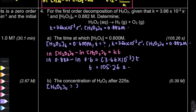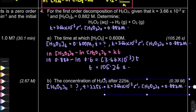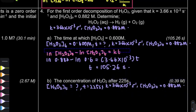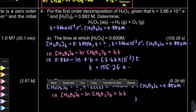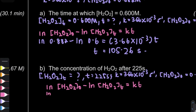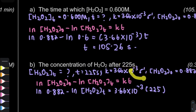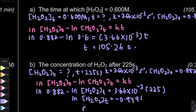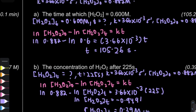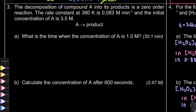Question B is different — they give you the time and ask for the concentration. K and the initial concentration come from the question. We use the integrated rate equation for first order, substitute the values, and make sure the unit of time matches the unit of the rate constant. We get the concentration = 0.39 molar. Note: in question 3, you need to convert 100 seconds to minutes so the units match your K.